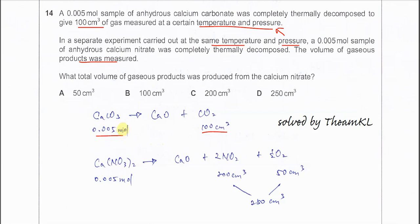Now we're not really sure what is the actual temperature and pressure for this reaction. So we must follow what the question provides: 0.005 mol will produce 100 cm³. Do not involve molar volume.